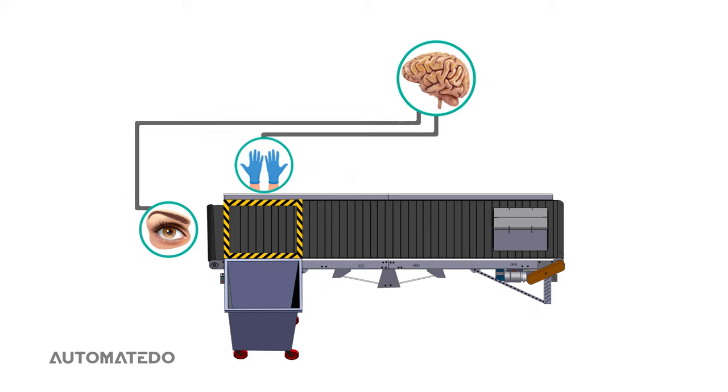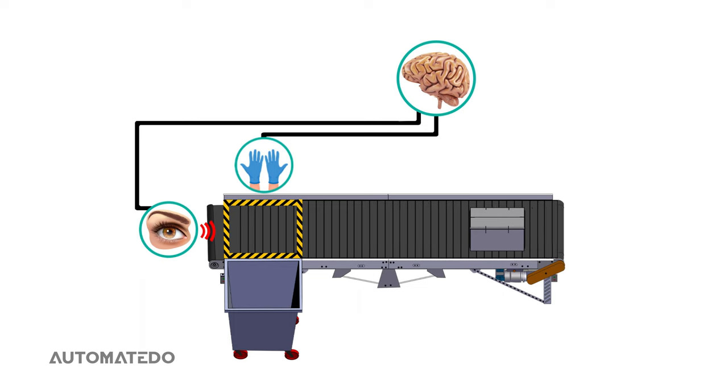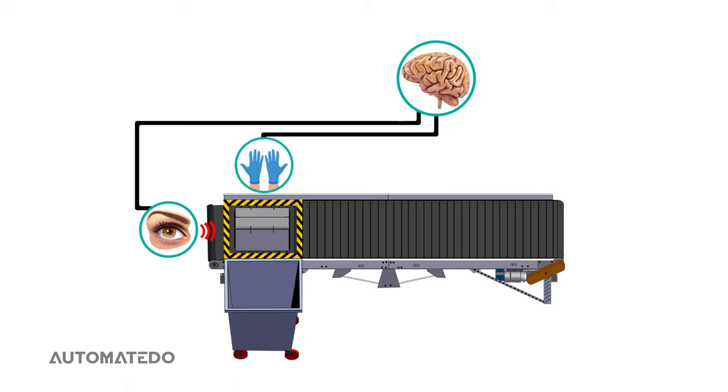At this point, the operator focuses her eye on the end of the conveyor. When the box reaches that spot, the operator's eye detects the box, and then sends data to the brain.